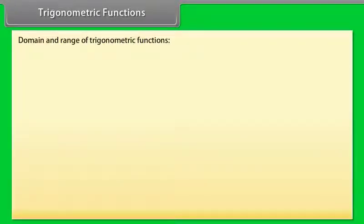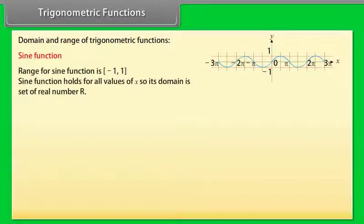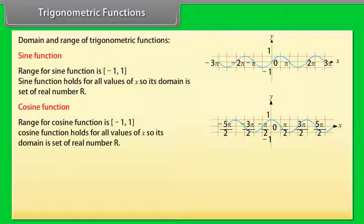Domain and Range of Trigonometric Functions: Since an angle can be considered as a real number, we denote the angle by x rather than θ. For the sine function, the range is [−1, 1] and the domain is the set of all real numbers R. For the cosine function, the range is [−1, 1] and the domain is also the set of all real numbers R.